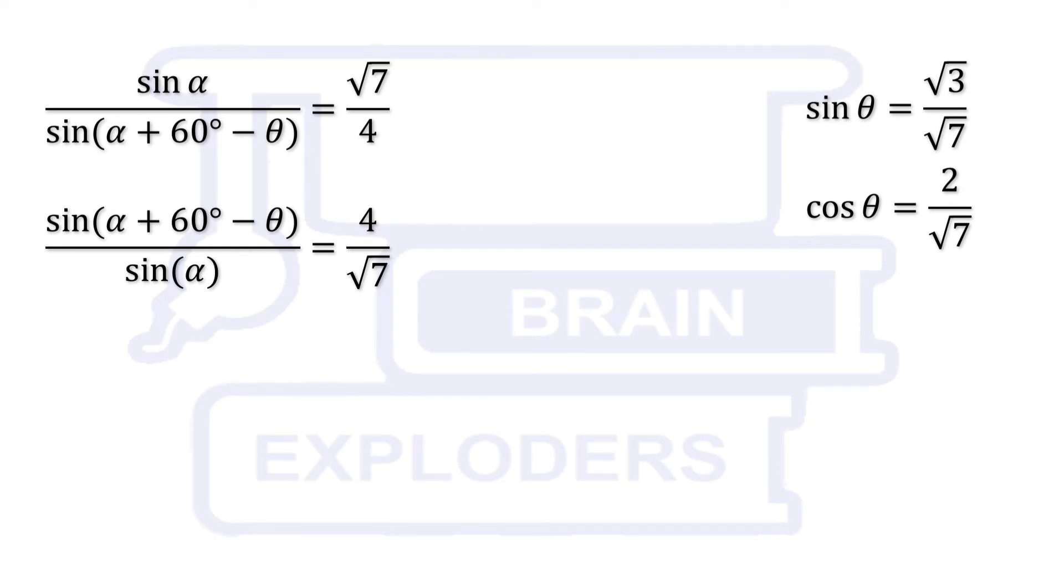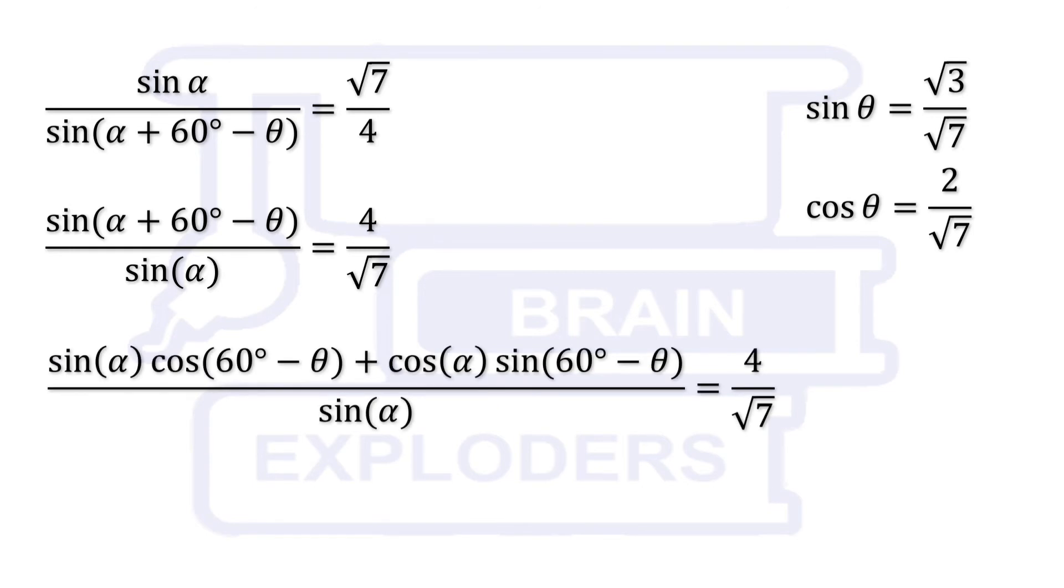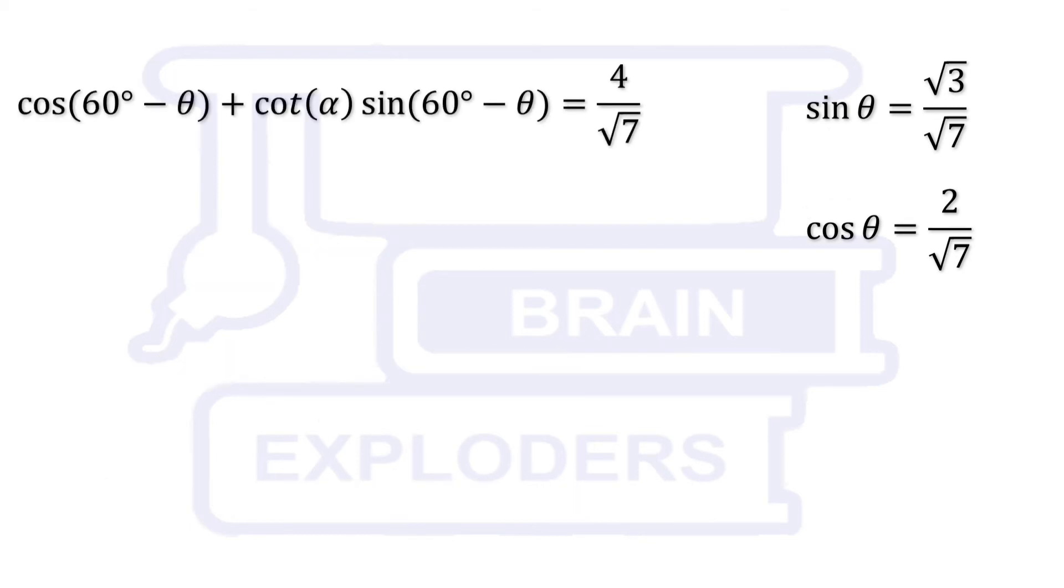Expand numerator using the formula of sin(A + B) considering alpha as A and 60 minus theta as B. In the obtained expression we need to put the values of sin and cosine of 60 minus theta which can be calculated using the formula of sin(A - B).